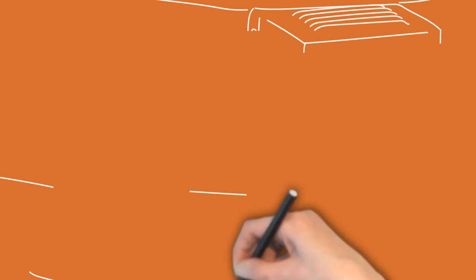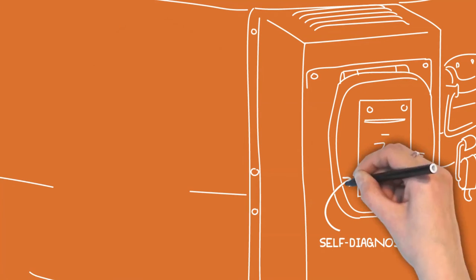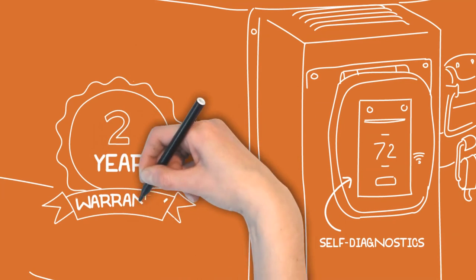Most SCUT controllers have built-in diagnostics. This enables us to help you troubleshoot it remotely. Each SCUT kiln has a 2-year warranty, which covers parts and labor.